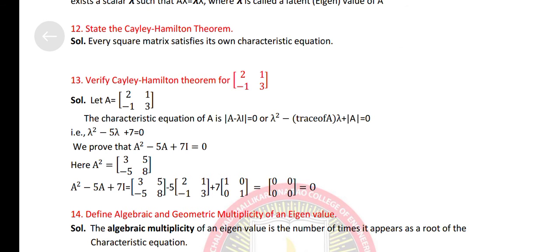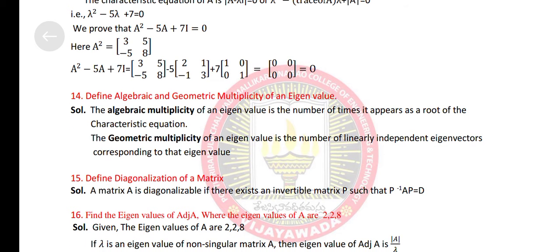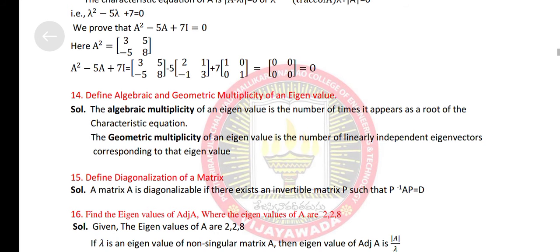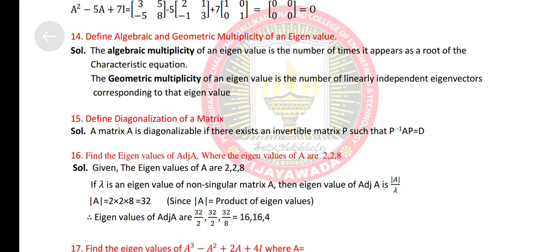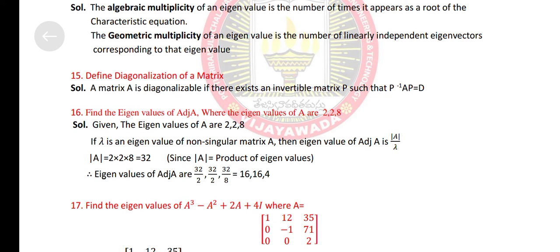Verify Cayley-Hamilton theorem for square bracket 2, 1, minus 1, 3. Define algebraic and geometric multiplicity of an eigenvalue. Diagonalization of a matrix. Find the eigenvalues of A, where the eigenvalues of A are 2, 2, 8.